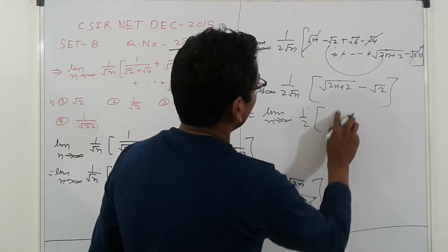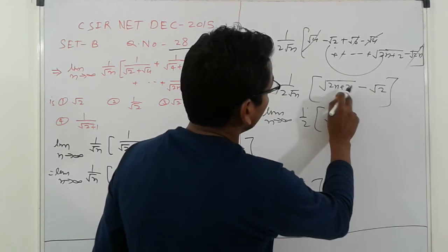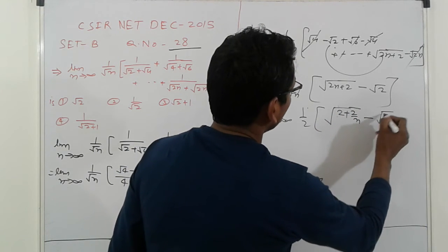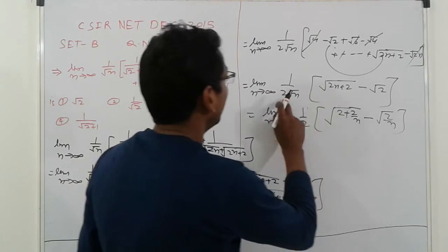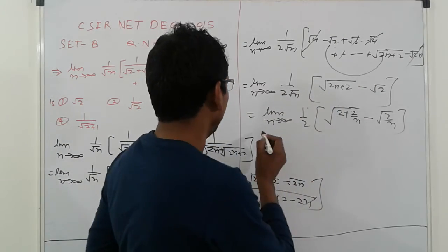Under root, root n. So 2 upon 2 plus here, 2 upon n minus under 2 upon n. Multiply that and adjustment divided of this. Then we get this. So take the limits.